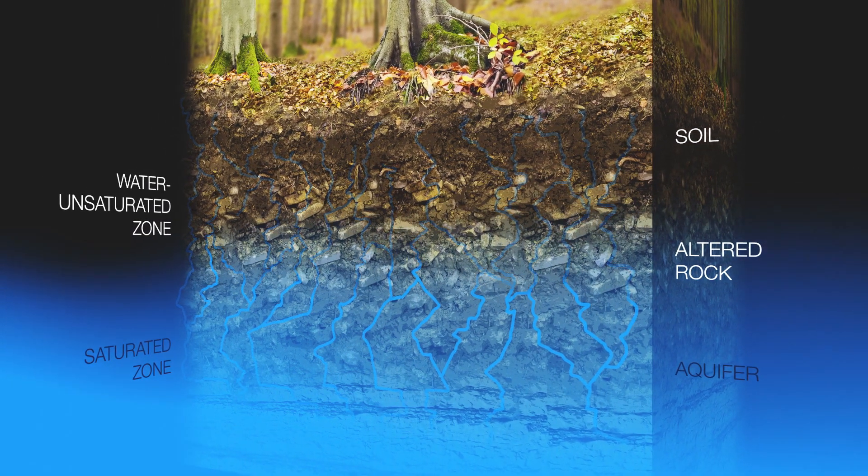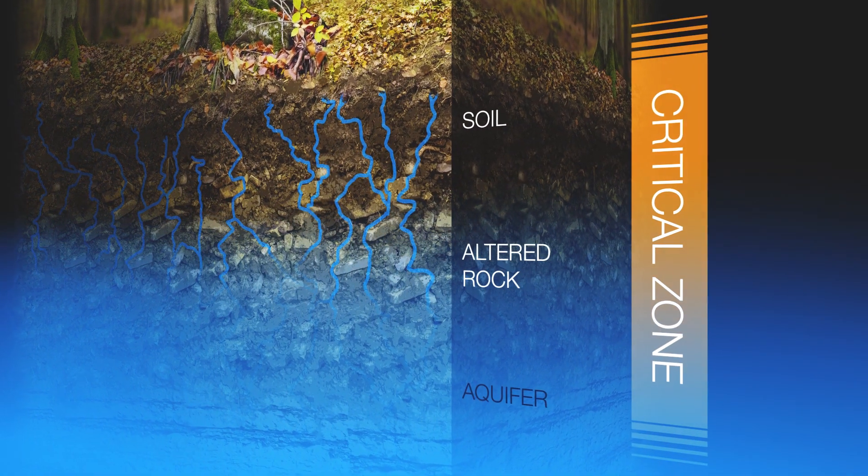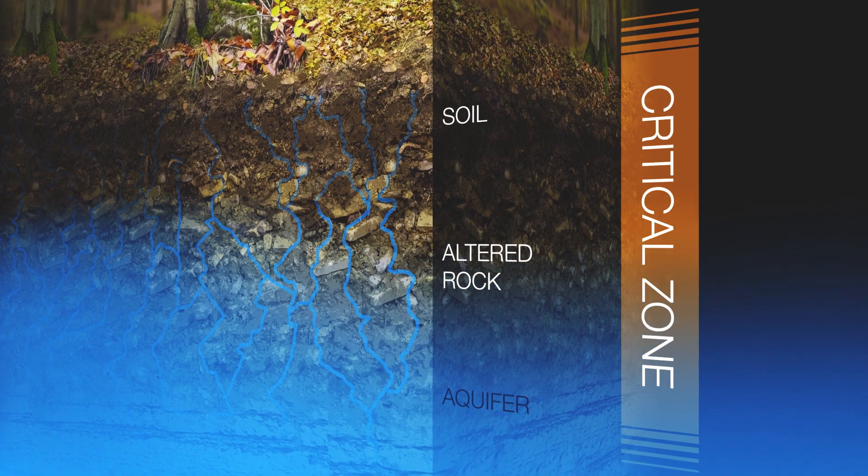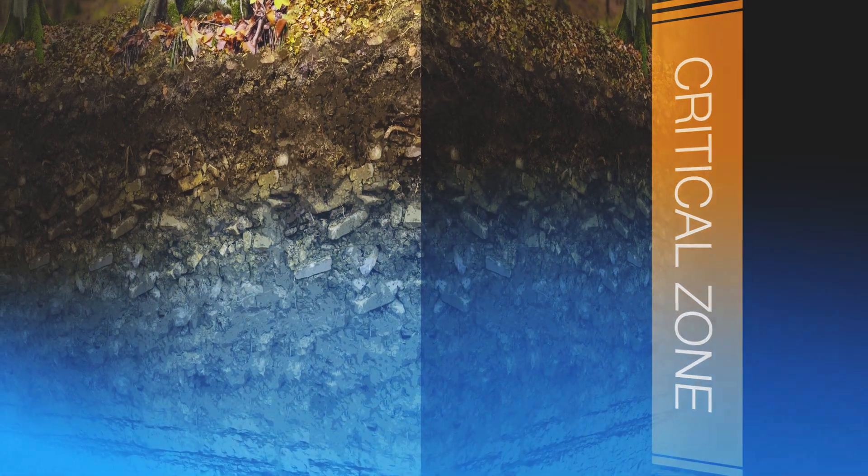The interface between atmosphere and geosphere is called the critical zone. This is where most plants and animals thrive, including us humans. It has important functions, such as providing clean drinking water and carbon storage.